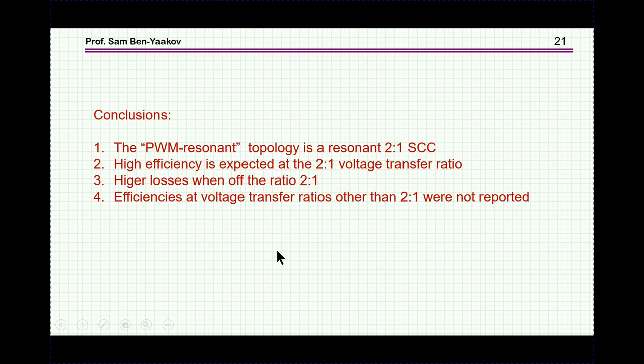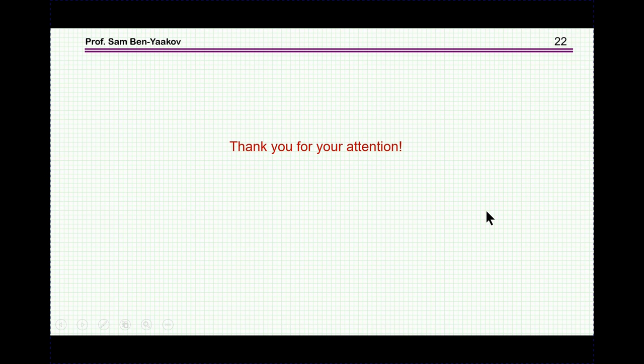So, what are the conclusions of this discussion here? The PWM resonant topology is, in fact, a resonant switch capacitor converter with a 2 to 1 transfer ratio. High efficiency is indeed expected at a 2 to 1 voltage ratio, that is when the output is the target voltage. When the ratio is off the 2 to 1, you can control it. It'll be better than a switch capacitor converter without resonant, but there are some added losses due to the hard switching and the current through the diode. Unfortunately, we do not have any information about the efficiency of this converter at voltage transfer ratios which are other than 2 to 1. They were not reported as yet. So, this brings me to the end of this presentation. I hope you found it interesting, and it will be useful to you in the future. Thank you very much.